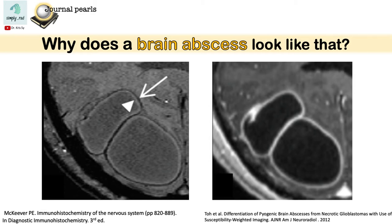This outer hypo-intense rim on the SWI image corresponds to the enhancing part of the granulation tissue.